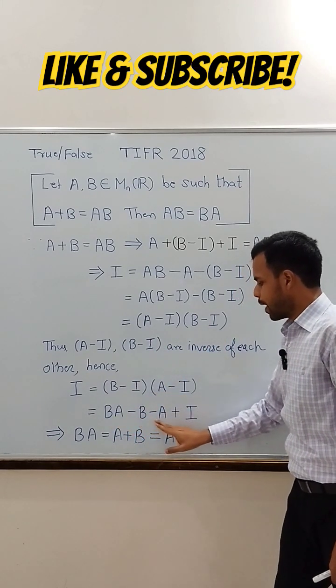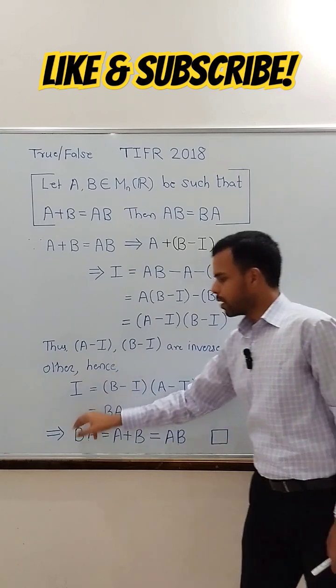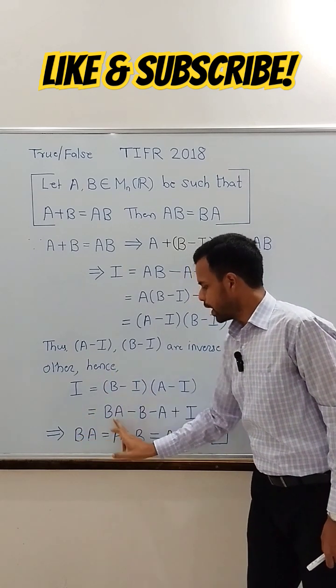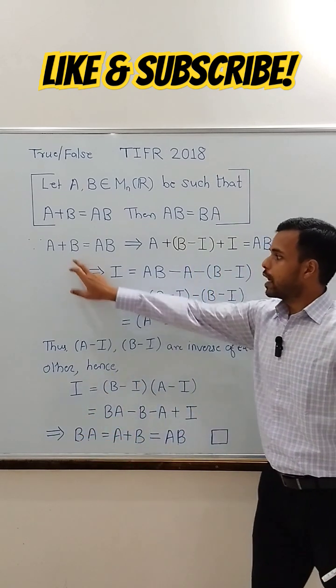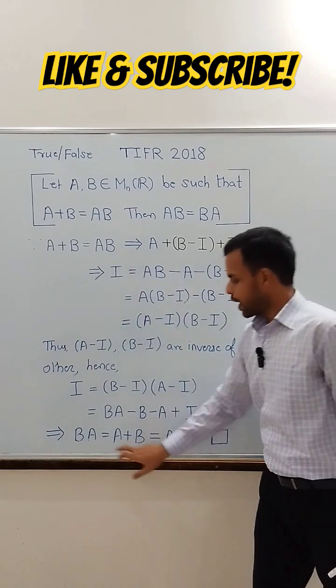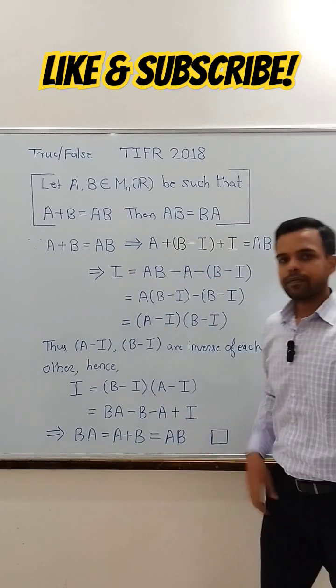Simplifying we get BA minus B minus A plus I. Subtracting identity matrix from both sides we get BA equals A plus B. But A plus B equals AB, so we get BA equals AB. The given statement is true.